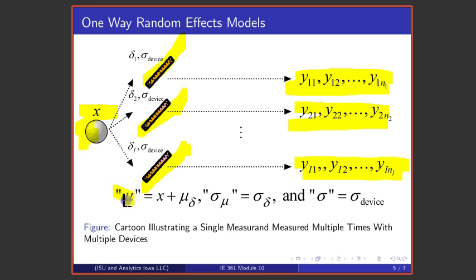In this context, the μ of the general one-way random effects model is the truth about the object under investigation, the measurand, plus the average bias of these κᵢ devices.